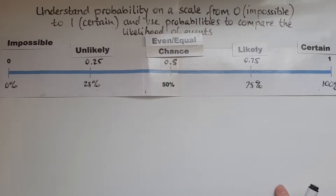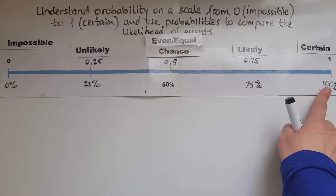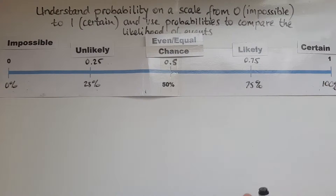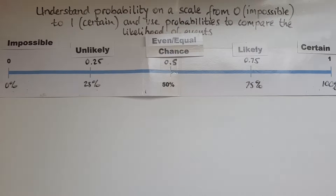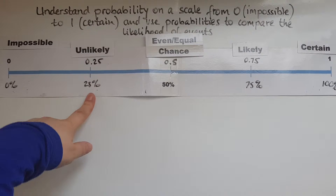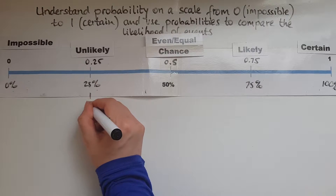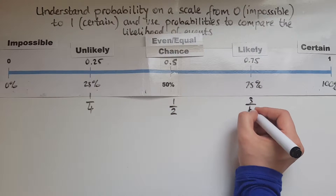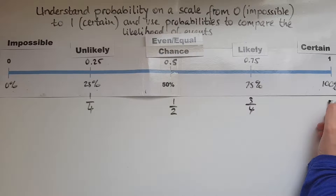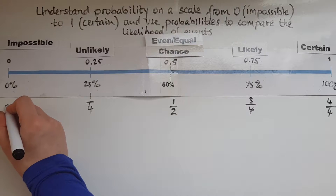Something is impossible because the chances of it happening are 0 percent, or just 0 as a decimal. If it's certain, it has a 100 percent chance of happening, or just 1 as a decimal — meaning a whole, 100 percent. We also express probability as a fraction: one quarter, a half, three quarters, and four quarters or a whole.